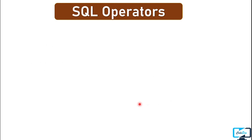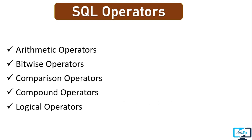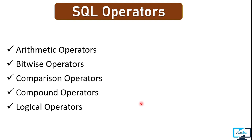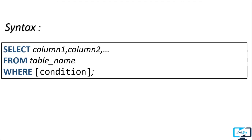In SQL we majorly have 5 types of operators: arithmetic operators, bitwise operators, comparison operators, compound operators, and logical operators. In today's video we will discuss the comparison operators. There are 6 comparison operators we will use today with the WHERE clause. The WHERE clause is specified right after the table name written with the FROM clause, and after WHERE we specify a condition to filter the data.